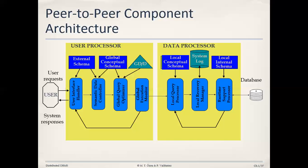The task of the runtime support processor is to execute the query by generating an access path and looking up the localized internal schema — the physical schema — so the data can be retrieved from that particular drive. The data is received or saved at a particular site based on the LIS. Every localized site has its own LCS and LIS. The data is retrieved, sent back to the local query processor, then back through the global execution monitor to the user, who can view the requested data. That is how peer-to-peer component architecture works.